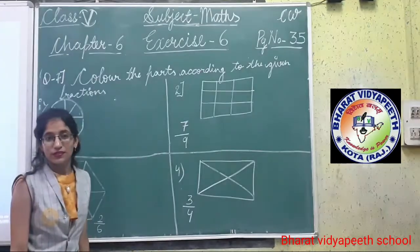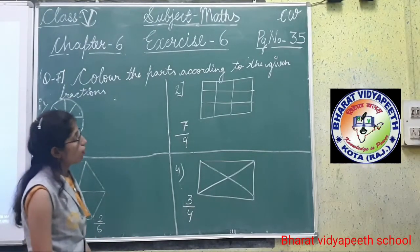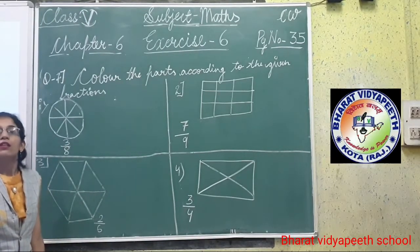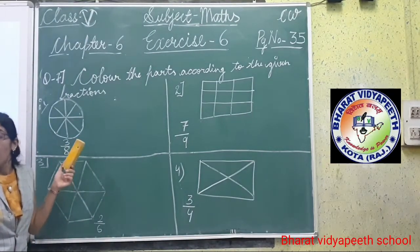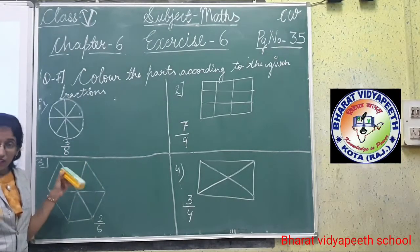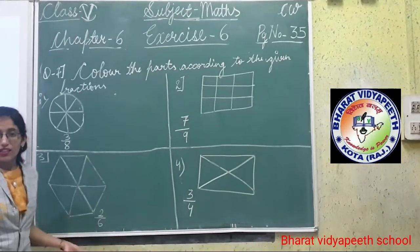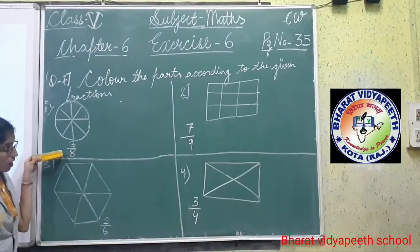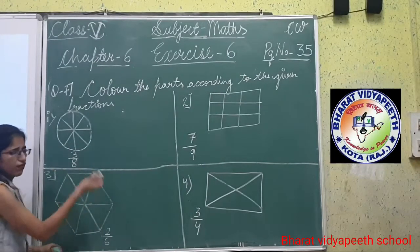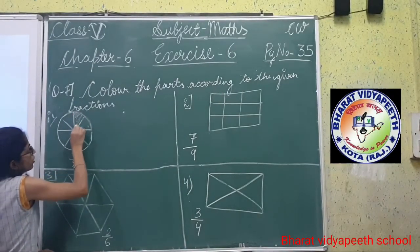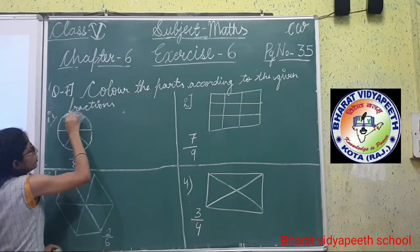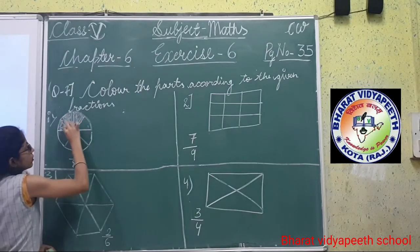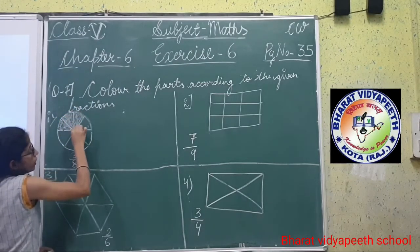Now see question number 7, children. Follow the parts according to the given fraction. In the previous portion, the shaded part was given and we wrote the numbers. Now here, we are given the numbers and we do the shading. For example, 3 by 8 means total number of parts is 8 and shaded part is 3. We shade 3 parts: 1, 2, 3. Clear? 3 parts will be shaded.